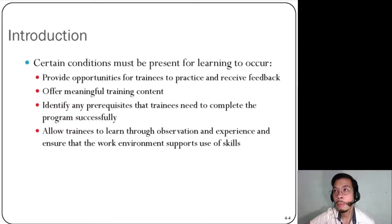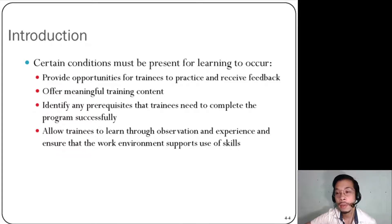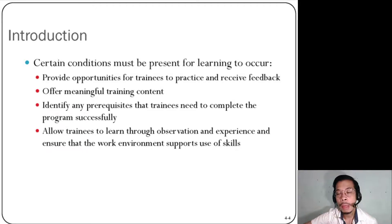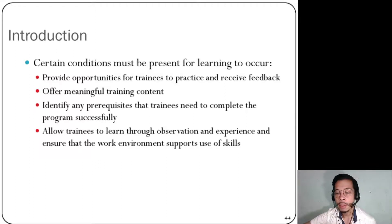Another item that should be present for learning to occur is to allow trainees to learn through observation and experience, and ensure the work environment supports the use of skills. In psychology, it has been hypothesized that the more we practice certain habits, the more we develop motor and physical skills — and the same applies to training. The more we practice and the more the environment is supportive of those endeavors, the more successful training will become. This checklist is related to social learning theory.